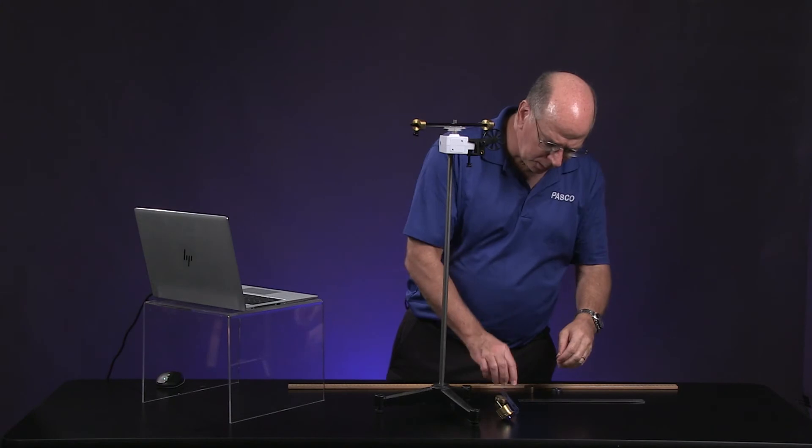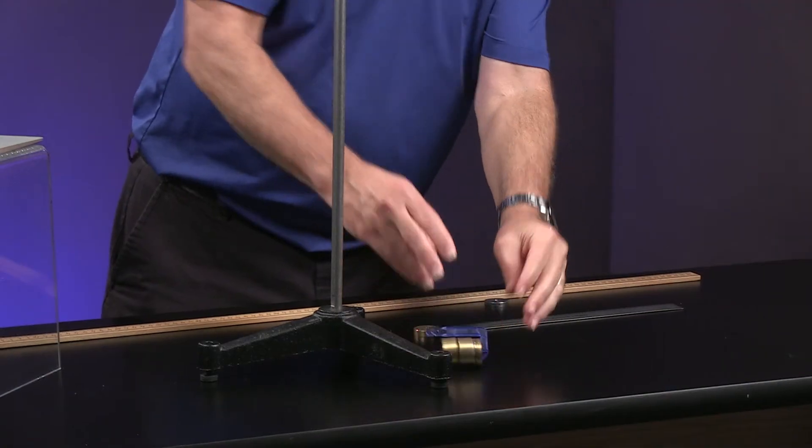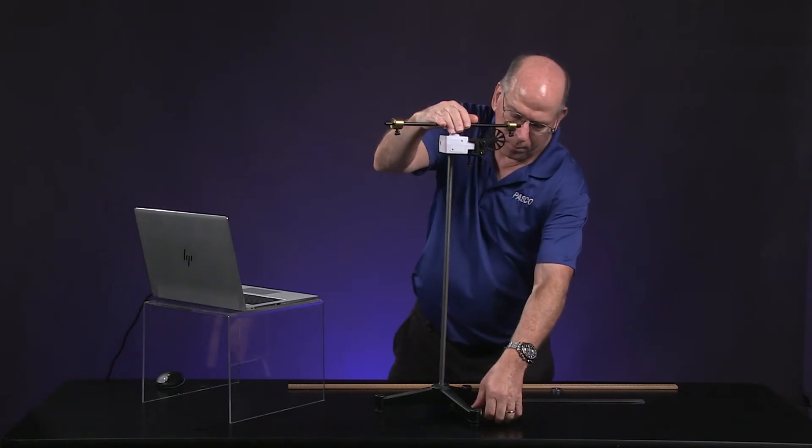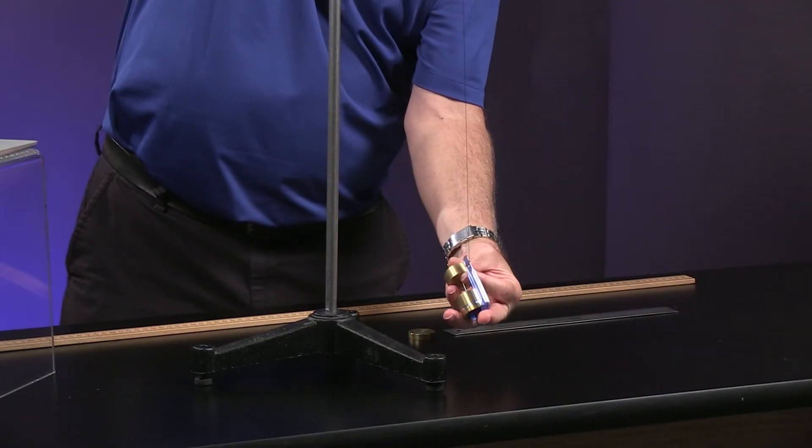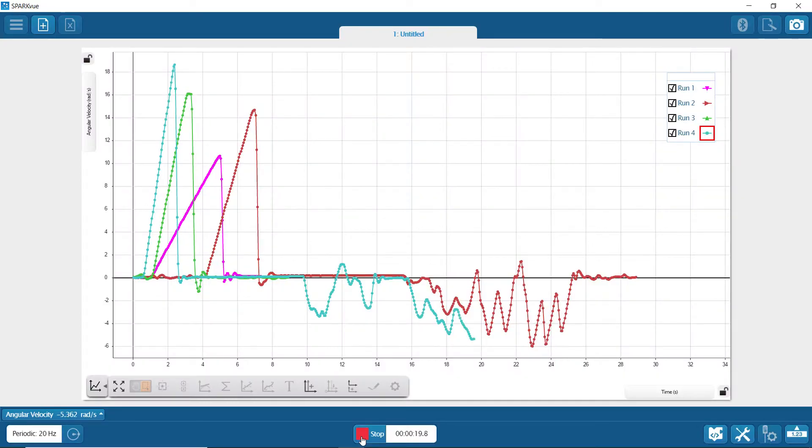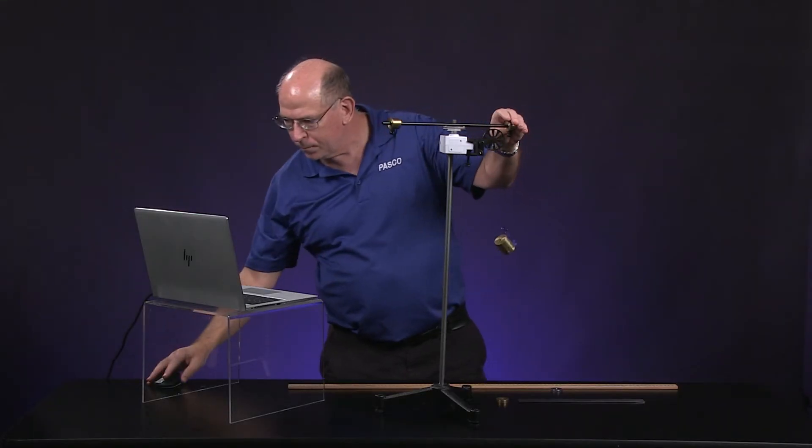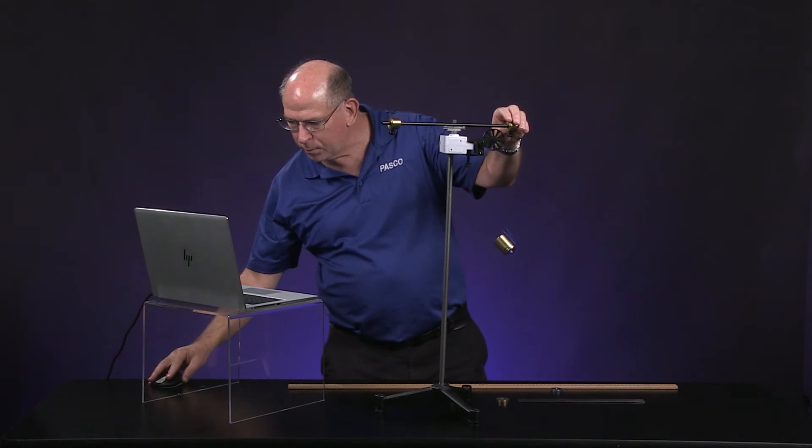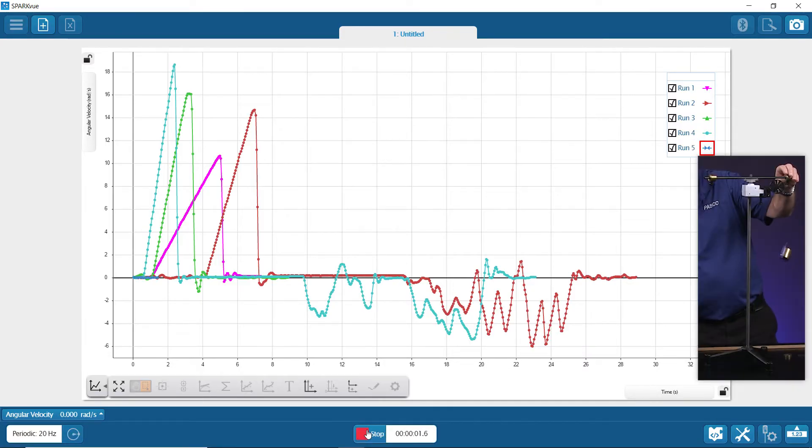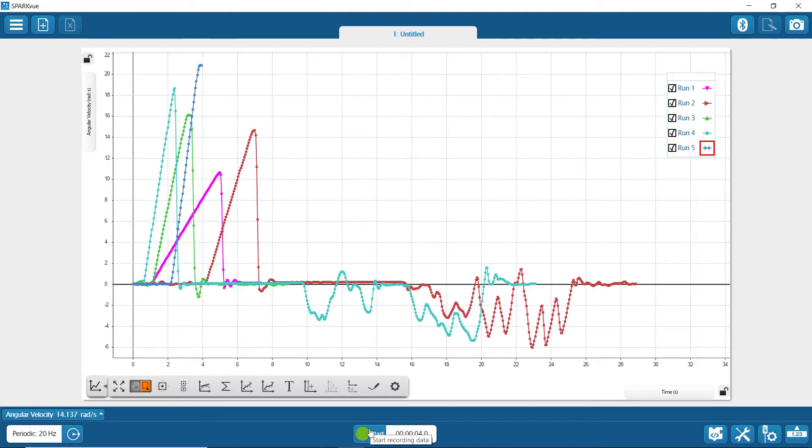Then finally, trial five, got 0.25 kilograms on there. You can see the slope of the line gets steeper every time. Oh, still running. There we go. So now we have five trials.